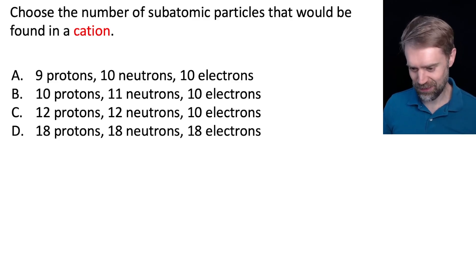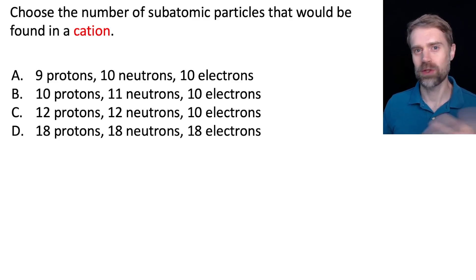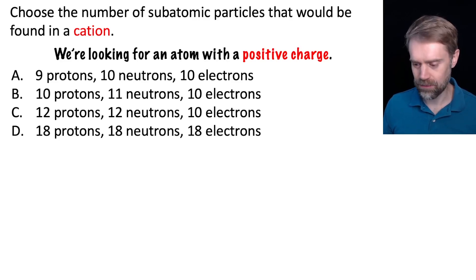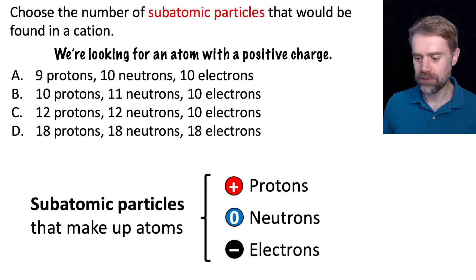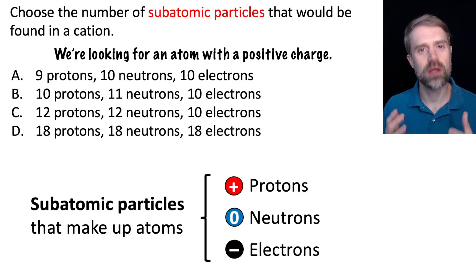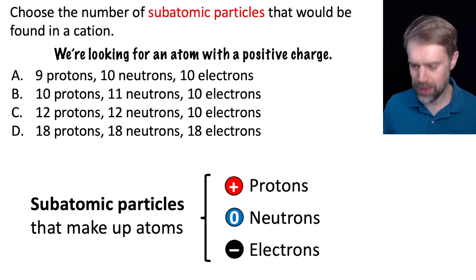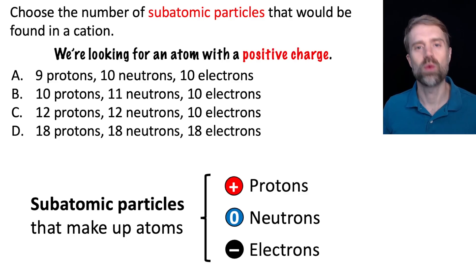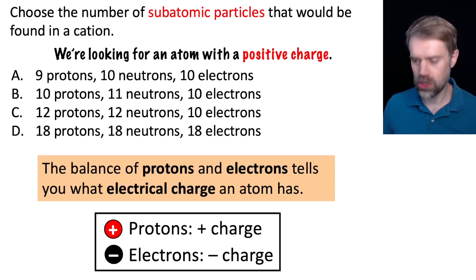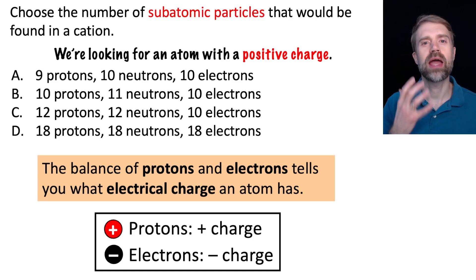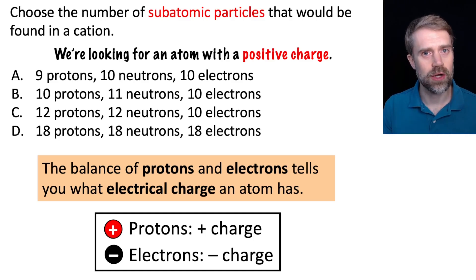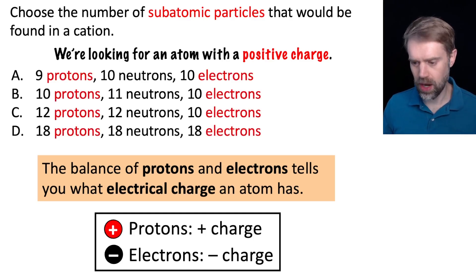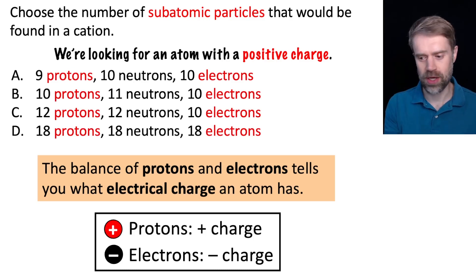Going back to the question, we have to choose the number of subatomic particles that would be found in a cation — in other words, an atom with a positive charge. Looking over the answer choices, they all have different numbers of subatomic particles: protons, neutrons, and electrons. The subatomic particles are the tiny pieces that make up atoms. When it comes to charge, the balance of protons and electrons tells you what electrical charge an atom has, so we're going to be focusing on the number of protons and electrons in each of the choices.